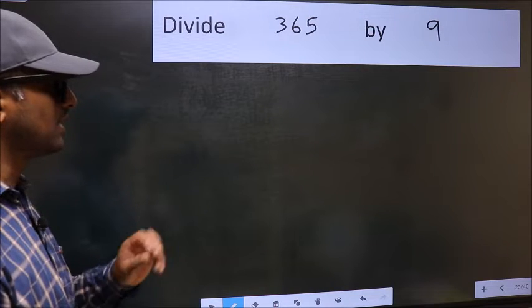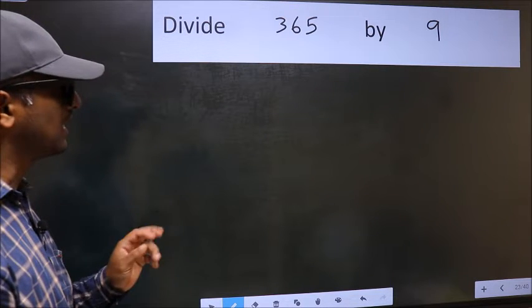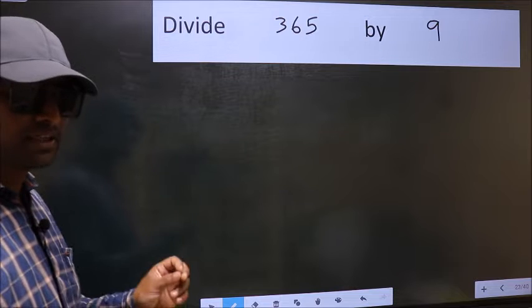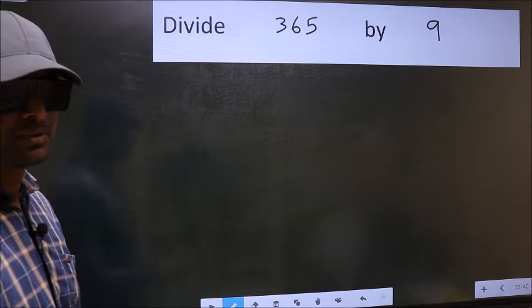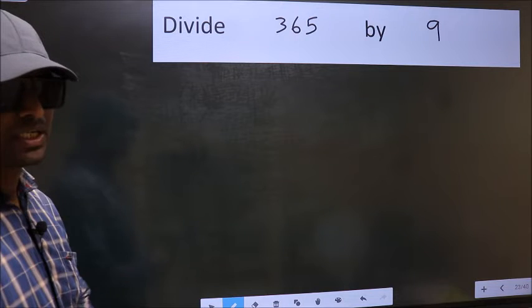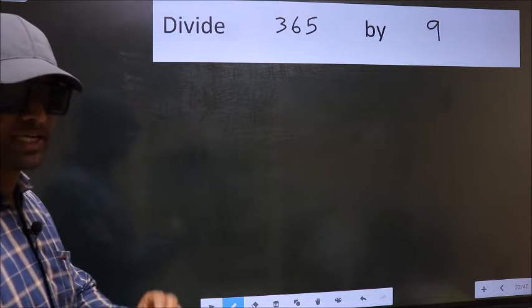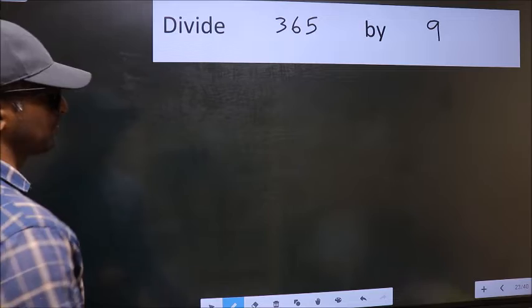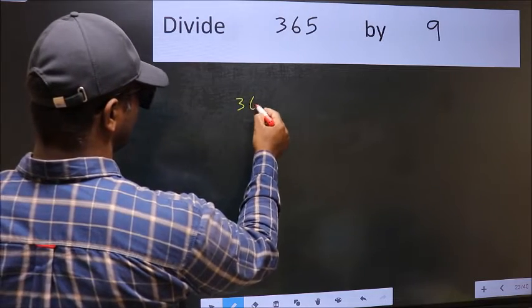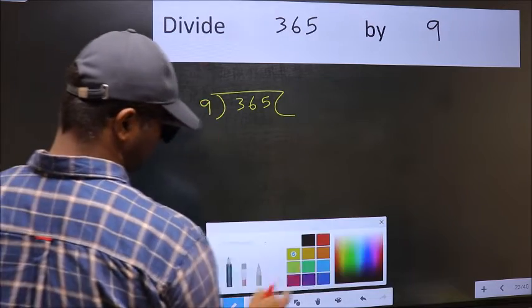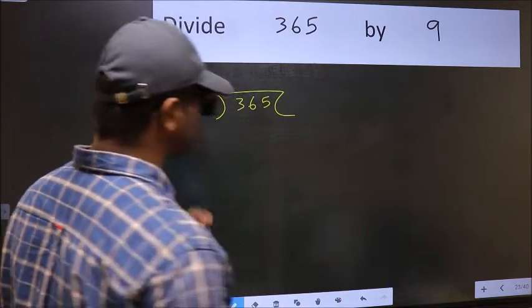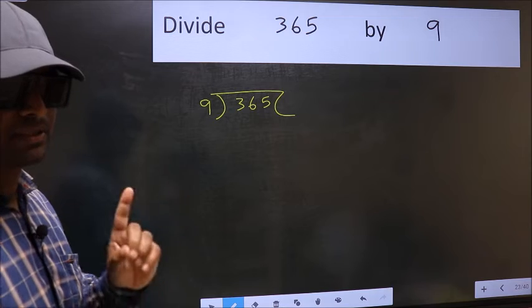Divide 365 by 9. While doing this division, many make this mistake. What is the mistake that they do? I will let you know. But before that, we should frame it in this way. 365 and 9 here. This is your step one.